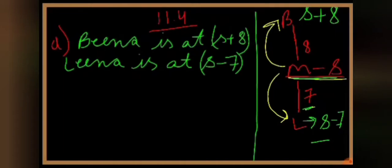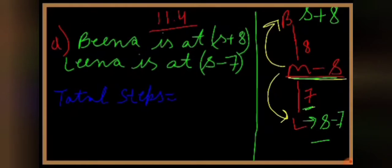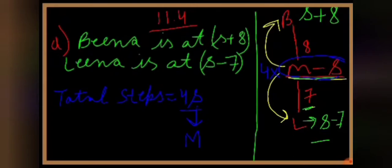Now it is asked to represent the total number of steps. The total steps are 10 less than 4 times what Meena has reached. Meena is at step S, so 4 times S is 4S. 10 less than that means minus 10. So the total number of steps is 4S minus 10.